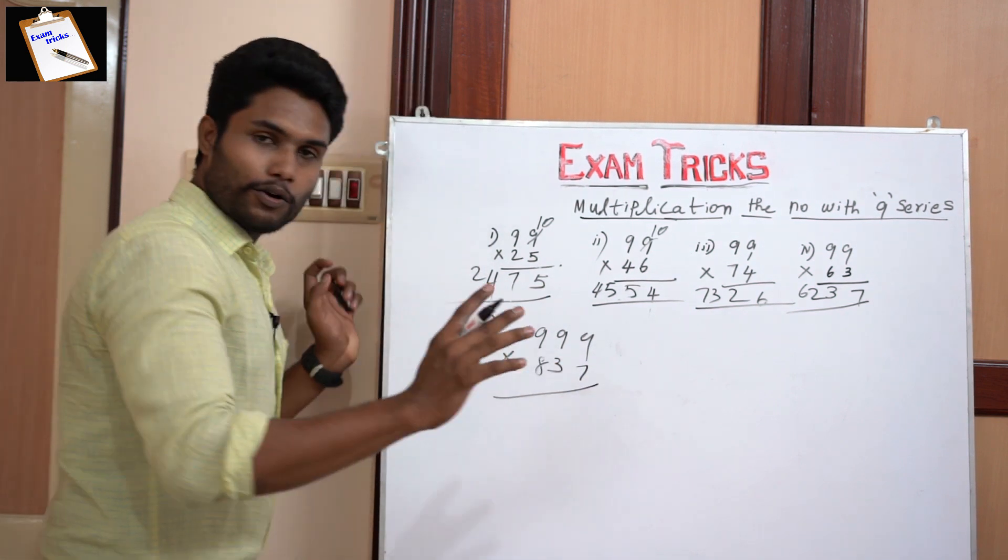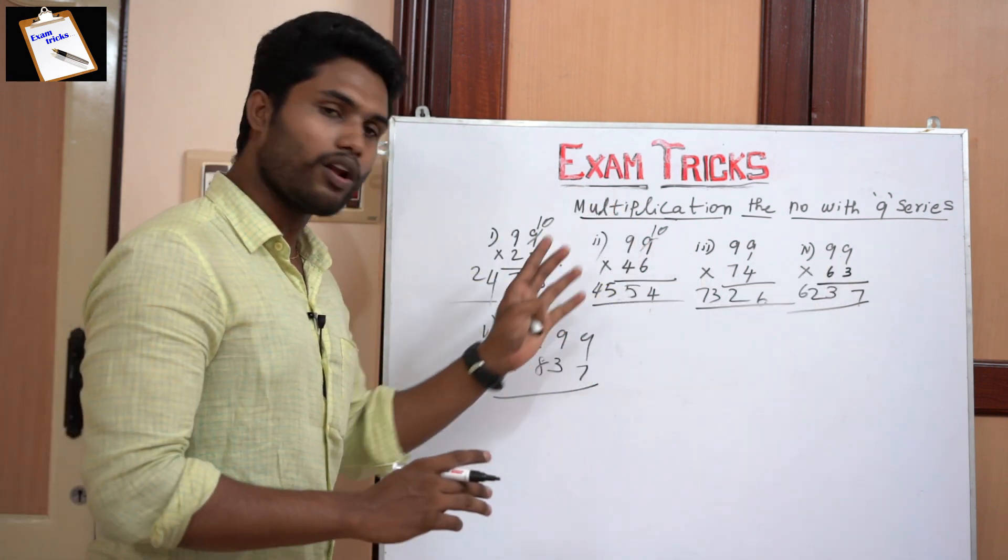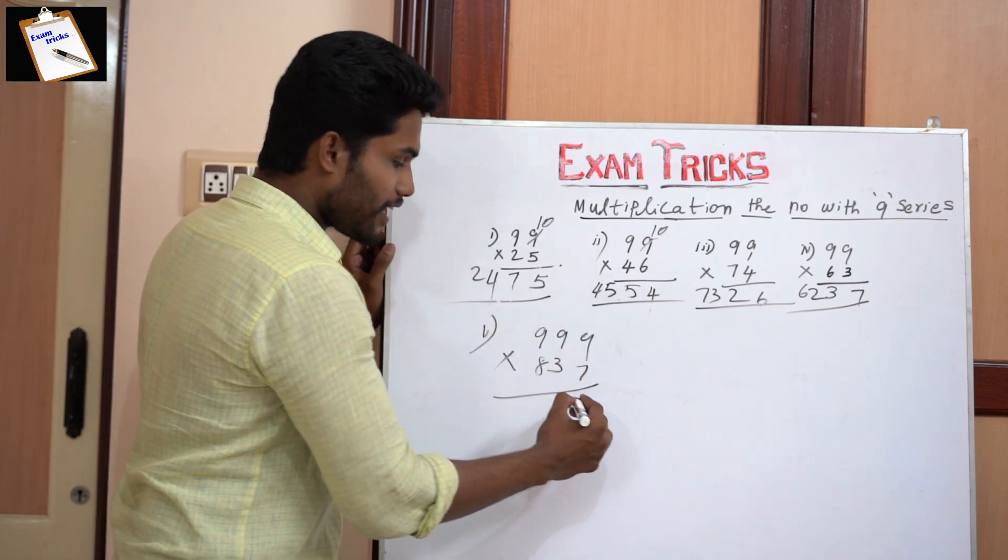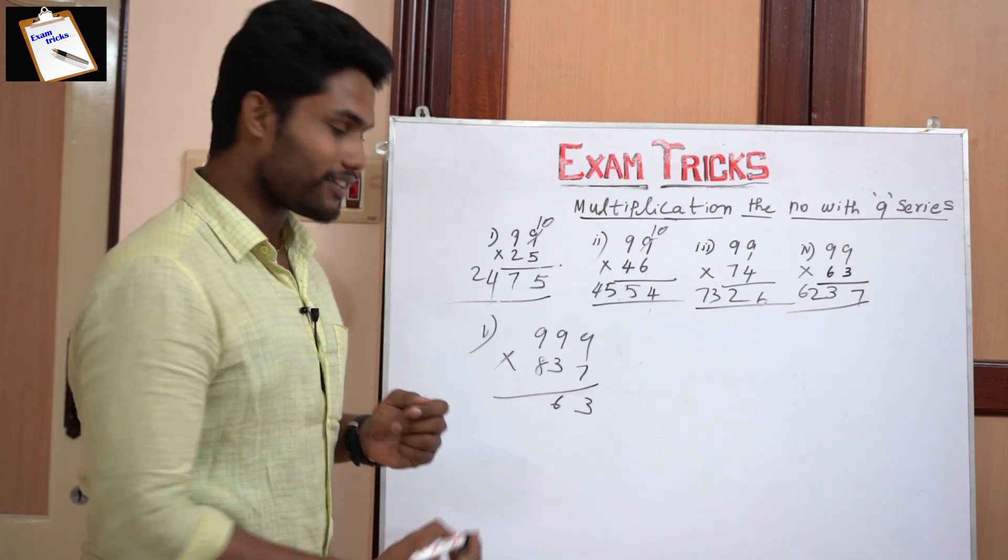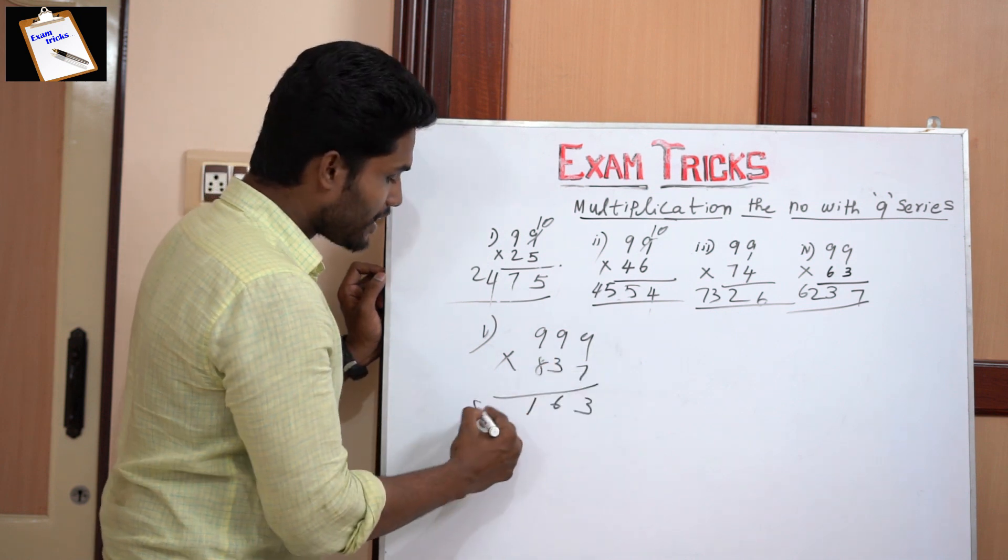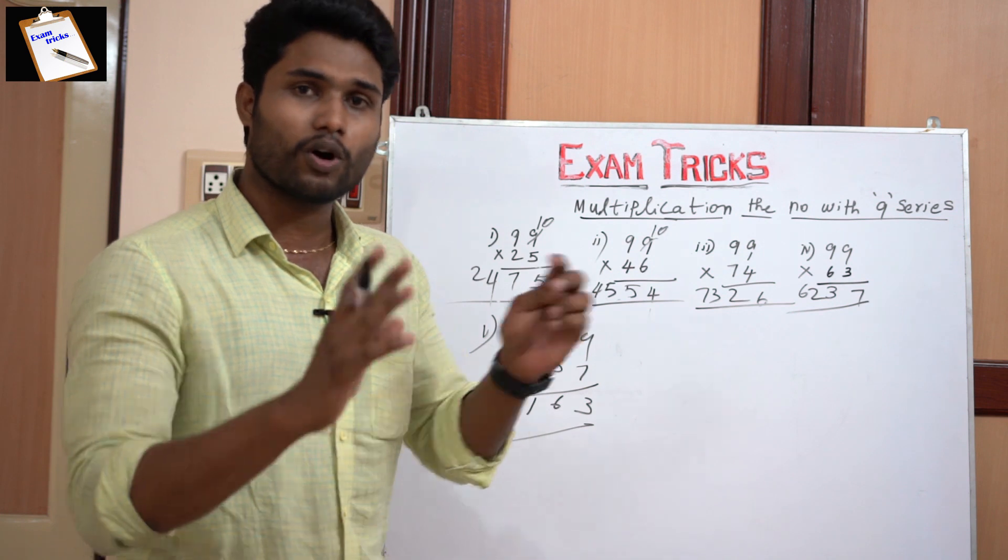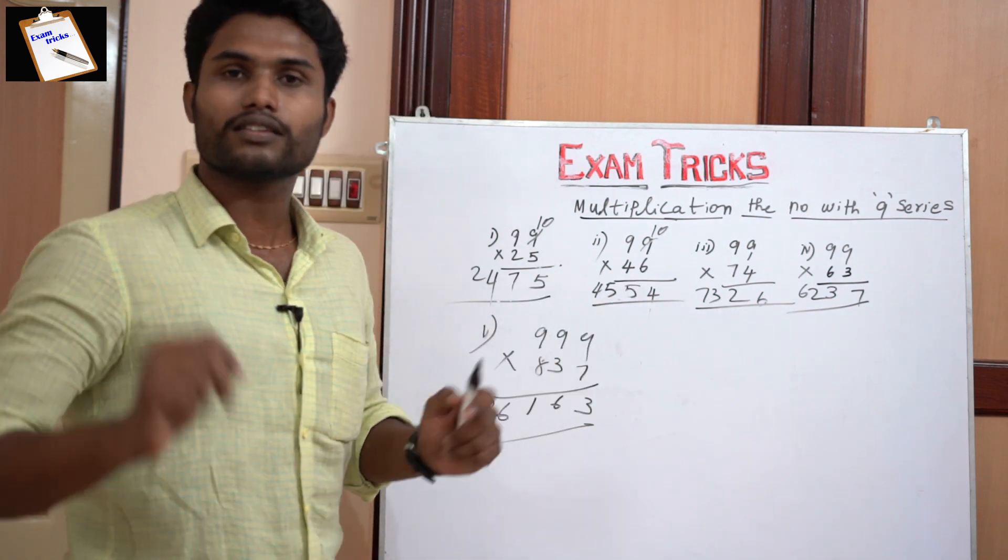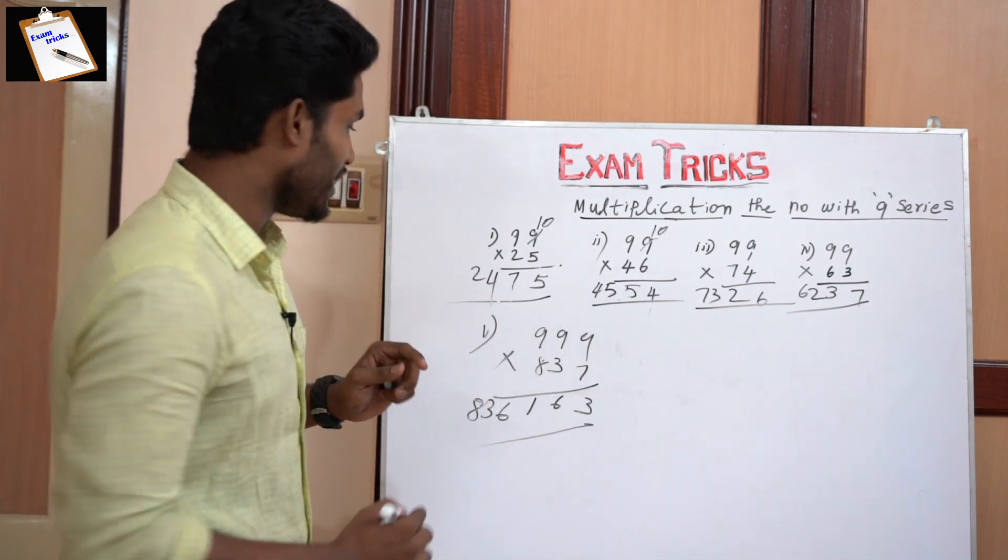Then how to multiply the number? The logic is common for all series, all kinds of numbers. First, assume the 9 as 10. 10 minus 7 is 3, then 9 minus 3 is 6, 9 minus 8 is 1. So the given number is 837, you can write 836. If you're doing like this in exams, you can solve simplification questions in bank exams or SSE exams in just two or three seconds. The answer is 836163.